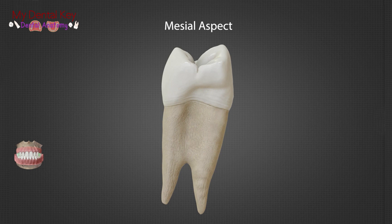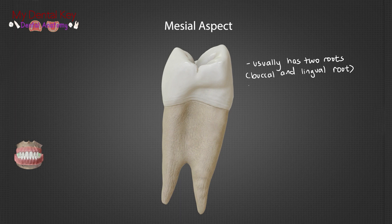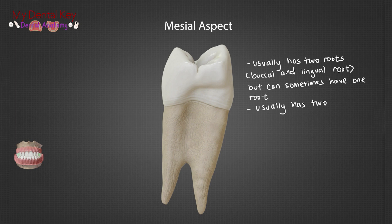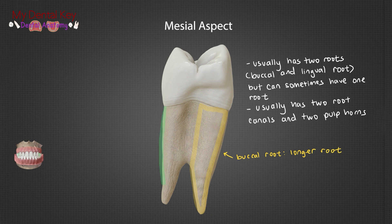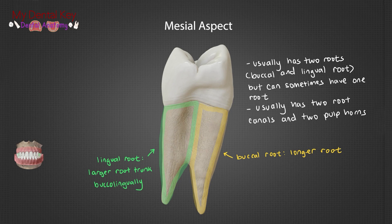The maxillary first premolar typically has two roots — a buccal and lingual root. This tooth is most frequently bifurcated, but can also have a single root or laminated or fused roots. Regardless of the number of roots, this tooth usually has two root canals and two pulp horns. The buccal root is the longer root, and the lingual root trunk is the larger root trunk buccolingually. The root tips can incline distally, buccally, or lingually, making this tooth particularly difficult to extract.